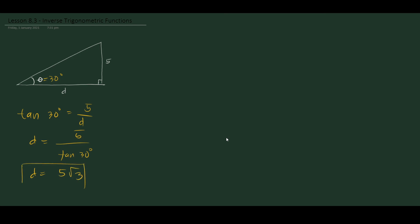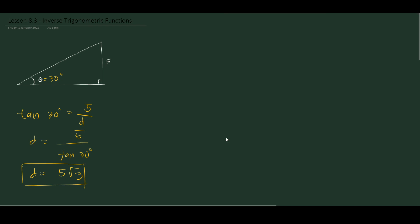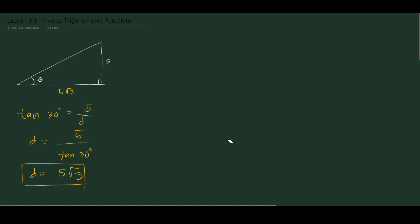Now, what if it's the other way around? If we are given 5 square root of 3 and asked to find the angle, how do we do that? This is where the inverse trigonometric functions come in.